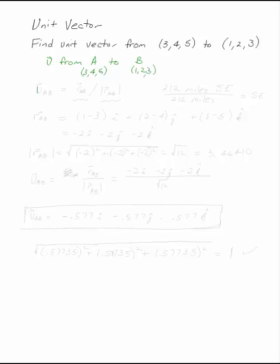The first thing you need to understand is that the unit vector uab is the position vector rab divided by its magnitude.